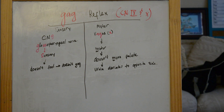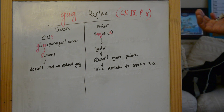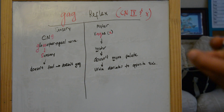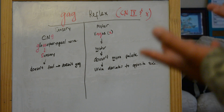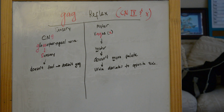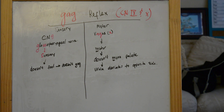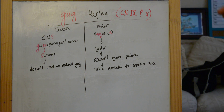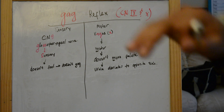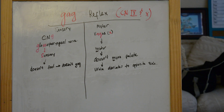With a right-sided lesion, there is no motor innervation to the right side, so there are no contractions of the muscles of the soft palate and uvula on that side. The uvula won't elevate on the right. On the opposite left side, there are unopposed contractions of the soft palate and uvula, which pull the uvula toward the left. So the uvula deviates toward the opposite side of the lesion due to unopposed contractions on the normal side.